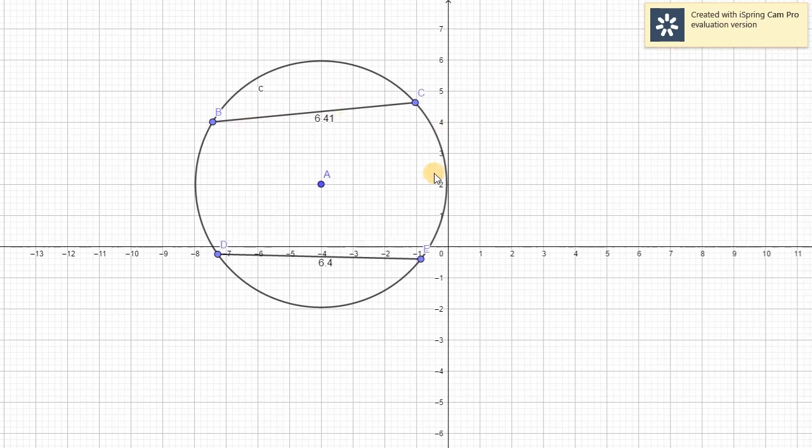So in this given, we have the circle, circle A, we have point BC or segment BC, and we have segment DE. Segment BC is a chord and segment DE is another chord.